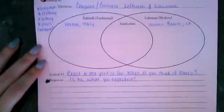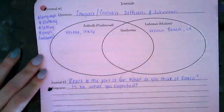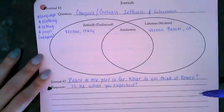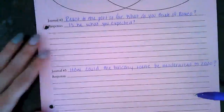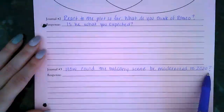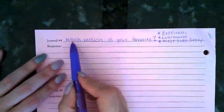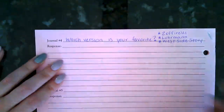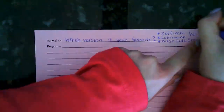I'm doing the same thing for the journals. You should have finished Journal One and Journal Two — 'react to the plot so far, what do you think of Romeo?' Journal Three is the one we discussed on our Zoom call: how could the balcony scene be modernized to 2020? And then today's journal, after we watch all the film clips: which version is your favorite — Zeffirelli, Luhrmann, or West Side Story? The important part is to tell me why.